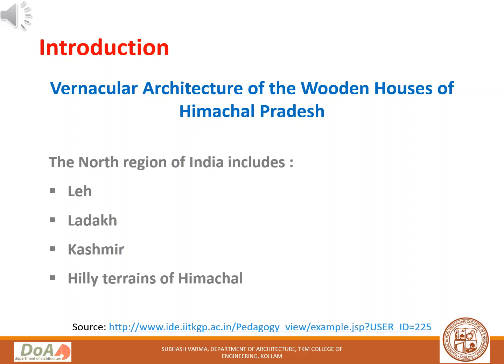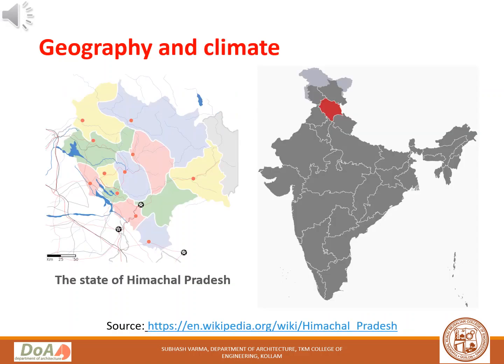The north region of India includes Leh, Ladakh, Kashmir, and the hilly terrains of Himachal. As a response to climate variations and availability of local building materials, many different types of dwellings are found in the mountains. Situated in the Western Himalayas, Himachal Pradesh is one of the 11 mountain states, characterized by an extreme landscape featuring several peaks and an extensive river system.